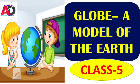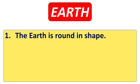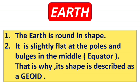So let's start. Do you ever wonder what exactly the shape of our Earth is? Earth is round in shape. It is a unique planet — the only planet to have life on it, and it is also called the blue planet. It is slightly flat at the poles and bulges in the middle at the equator. That is why its shape is described as geoid.